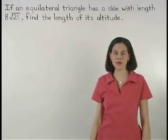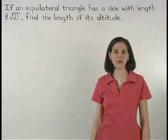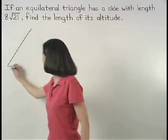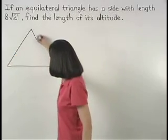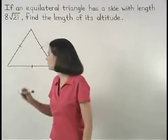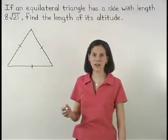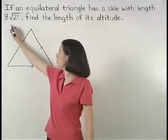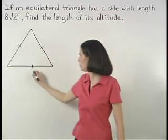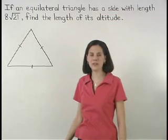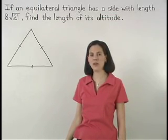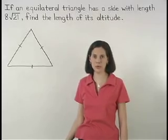Let's start this problem by drawing a picture of our equilateral triangle. We're given that one side of the triangle has a length of 8 root 21, and since it's an equilateral triangle, all three sides are congruent. So all three sides must have a length of 8 root 21.